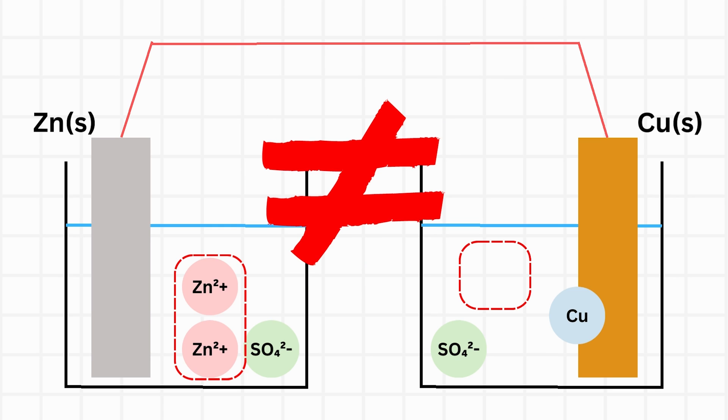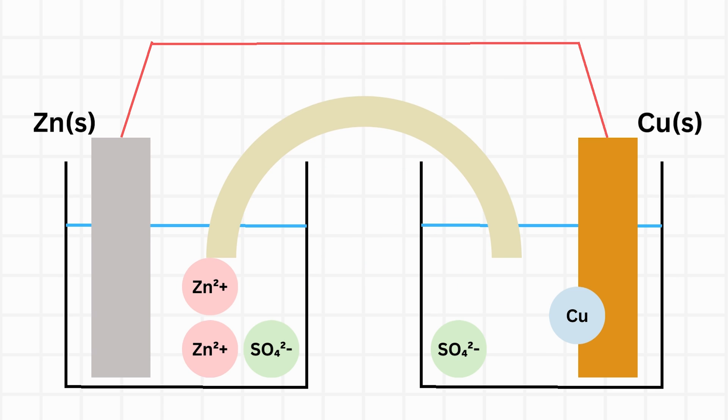So, to resolve this problem, Daniel cell uses salt bridge, consisting of electrolytes like NaCl. Since these ions fill out the imbalance of charge, the cell works properly, zinc sends its electrons to the copper ion.